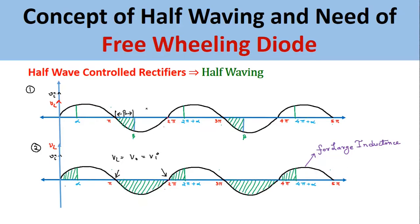As we studied in the last class, for the half wave control rectifier with inductive load, the duration beta for which the SCR remains in the negative half cycle of the input voltage depends on the capacity of the inductive load to store energy. If the capacity is high, the beta duration will be high; if low, the beta duration will be low.